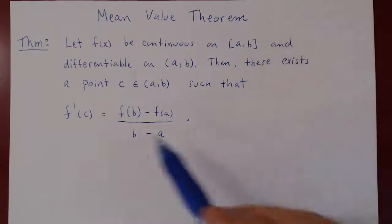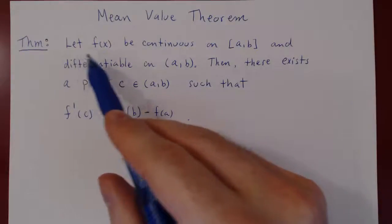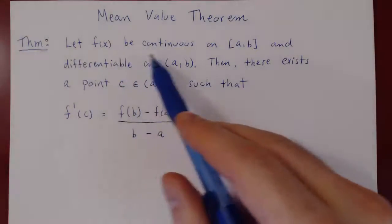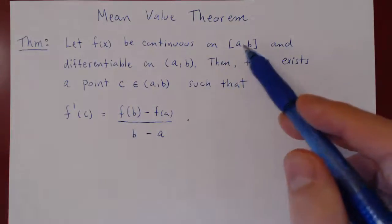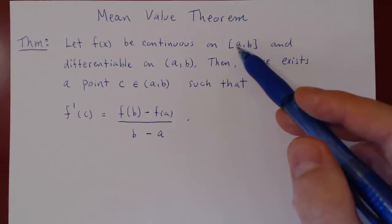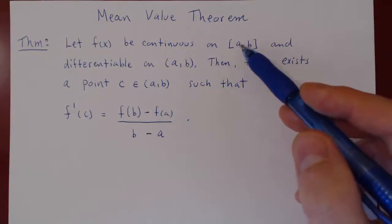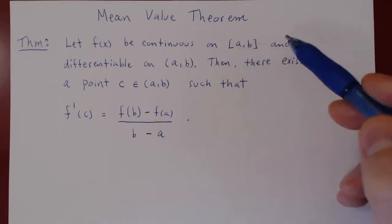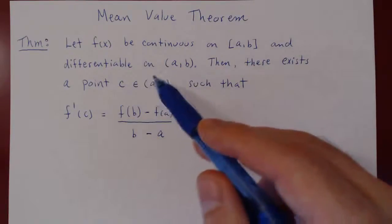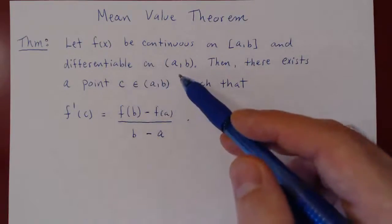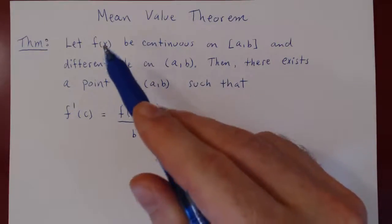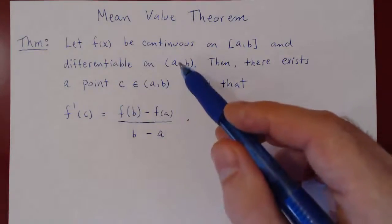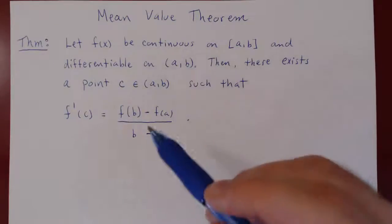Here's the statement. Let f(x) be a continuous function on the closed and bounded interval [a, b], where a and b are real numbers with a less than b. We also assume that f(x) is differentiable on the open interval (a, b), so the derivative of f at any point between a and b exists.